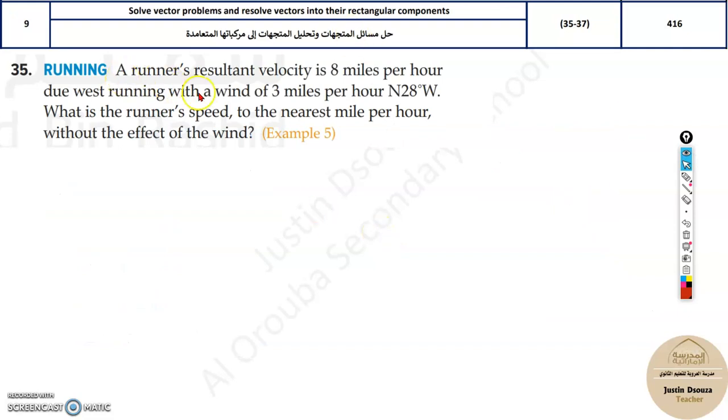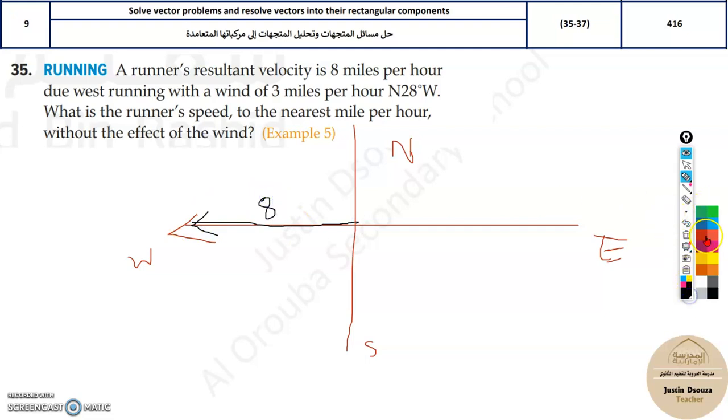A runner's resultant velocity is 8 miles per hour due west, running with a wind of 3 miles per hour. Due west means in this direction. North is up, south is down, right is east, and west is left. The runner's velocity is 8 miles per hour this way.